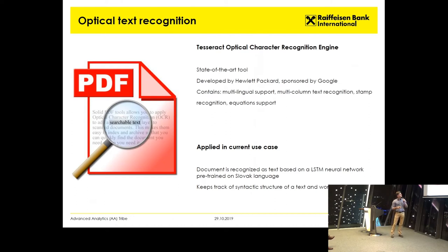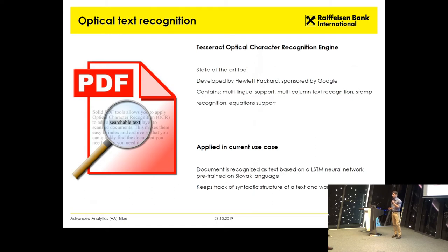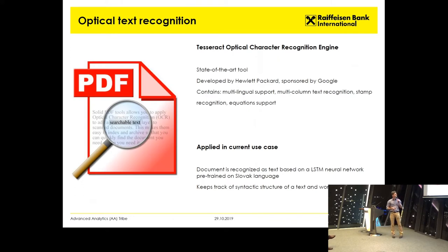After we get the clean picture, we recognize it in text format. For this we use the Tesseract solution, which was developed by Philip Parker originally but the development was sponsored by Google. This is currently the state-of-the-art open source OCR on the market. It has multilingual support covering over 100 languages, which covers all the languages used by RBI Group. It has nice features like multi-column text recognition, stamp recognition — even if the stamp is rotated, it still recognizes bits and pieces within it — as well as equations, and it includes neural networks internally which do a pretty good job of recognizing text.